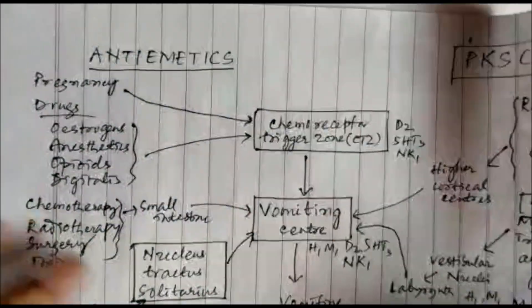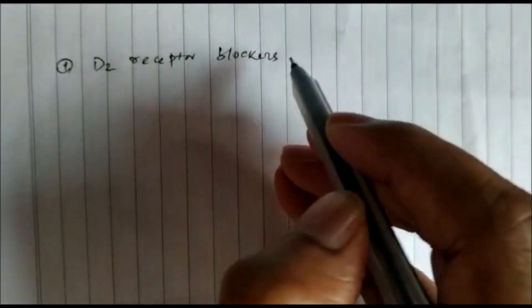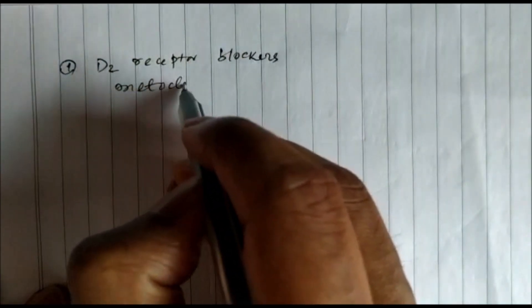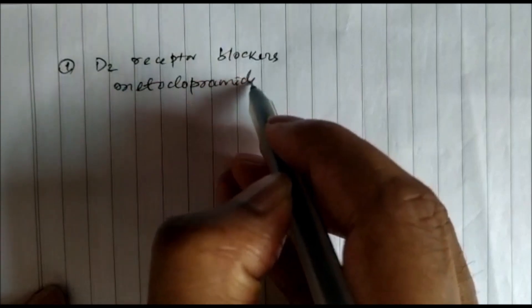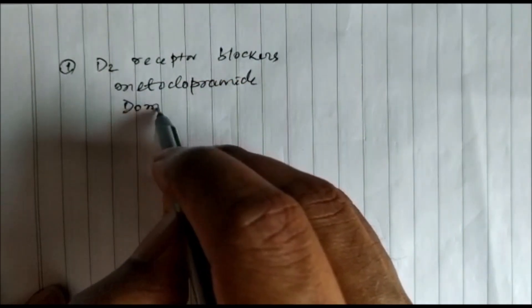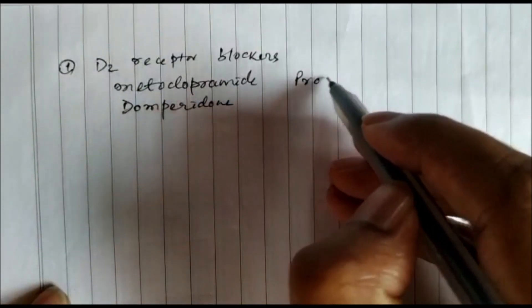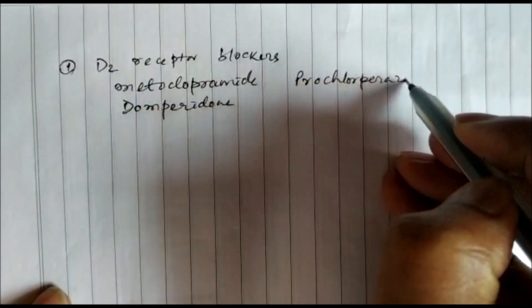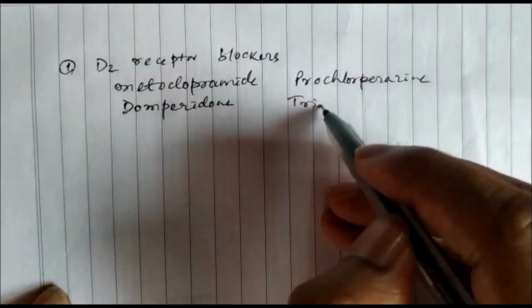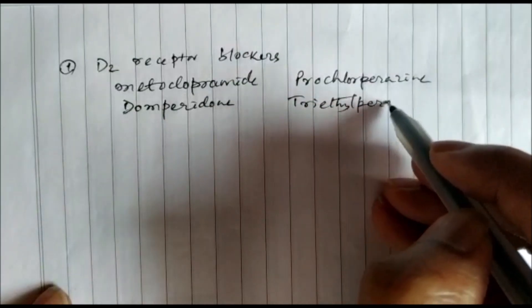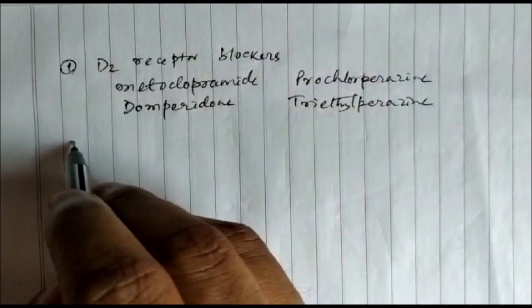Anti-emetic drugs can be divided into several groups. First, D2 receptor blockers, such as metoclopramide, domperidone, prochlorperazine, and triethylperazine.